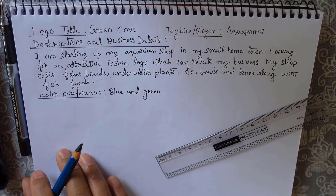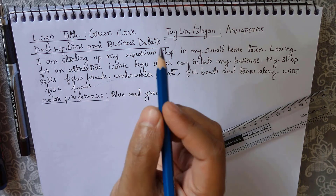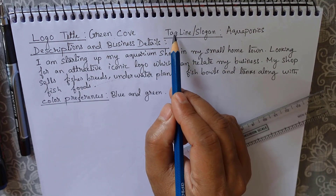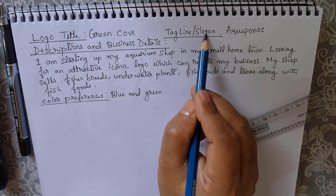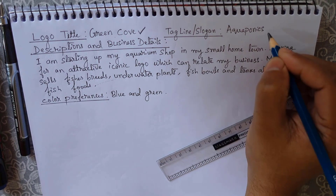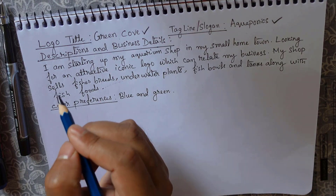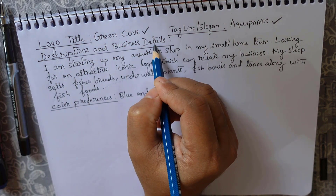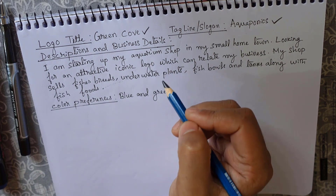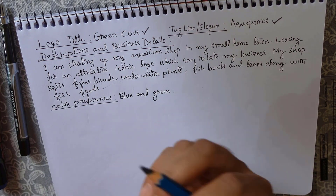Let me read out the details given by the client. The first most important thing is the logo title, secondly the tagline or slogan, and the third most important thing is descriptions and business details, which will tell about the customer's business and the type of logo they are looking for.